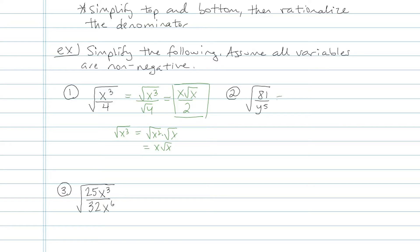Let's try the next one. Now in the next one again, same idea, I'm going to simplify that as square root of 81 over square root of y to the fifth because that helps me see that the top is just going to be 9. Now my denominator, my bottom is kind of weird.